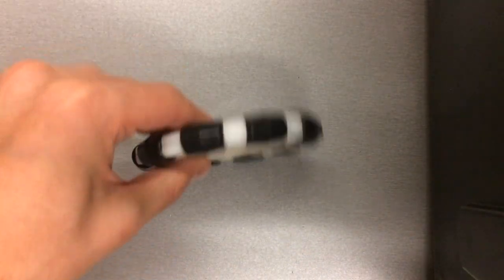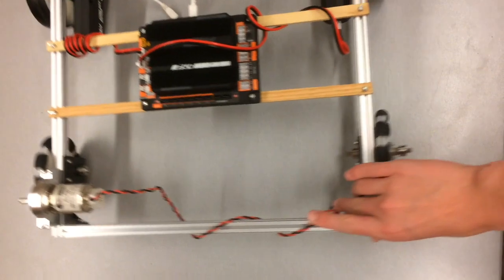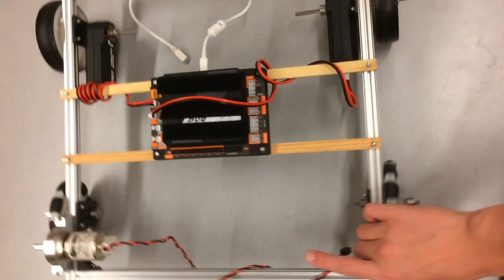This is an omni wheel. It can move both sidewards and forwards and backwards. These wheels are very helpful for non-powered wheels on a robot.